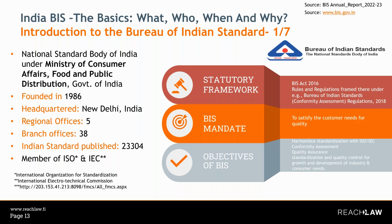More information is available through BIS links provided in the slides. Foreign manufacturers have a dedicated department at BIS headquarters in New Delhi and must apply for their license through the head office only — not through regional or branch offices. Domestic manufacturers across India use regional and branch offices. The dedicated department for foreign manufacturers is the Foreign Manufacturer Certification Scheme.